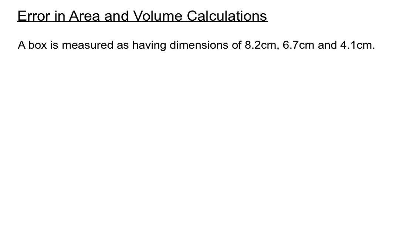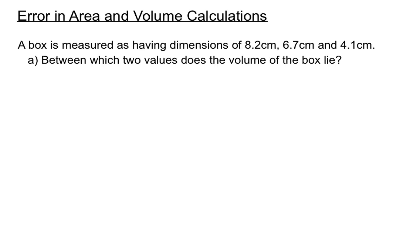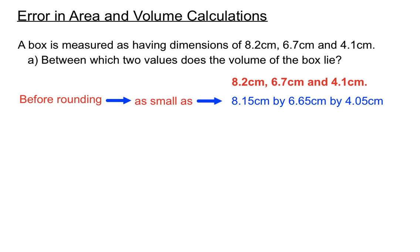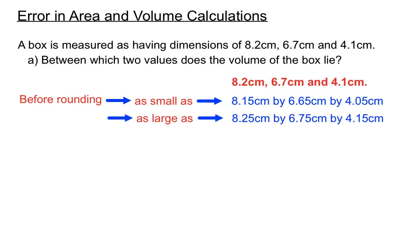Next example: a box measured at 8.2, 6.7, and 4.1 centimeters — between which two values does the volume lie? Volume of a rectangular prism is length × breadth × height. The smallest possible dimensions before rounding would be 8.15, 6.65, and 4.05. The largest possible dimensions before rounding down would be almost 8.25, 6.75, and 4.15.